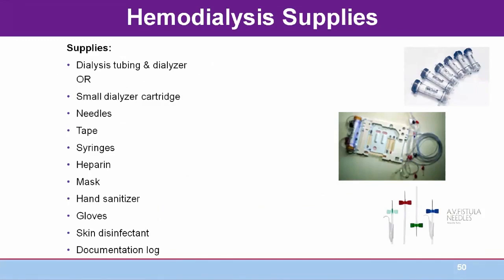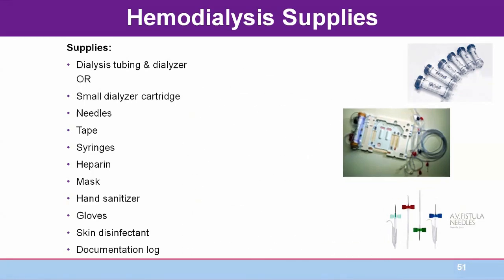These are examples of the supplies needed to set up the hemodialysis machine and begin treatment. As you can see, these therapies require a lot of education, skill, equipment, and supplies. The illustration of the needles brings us to an important part of hemodialysis therapy — the vascular access. The vascular access is not just important but essential. We must have a way to get the blood from the patient to the dialyzer and back, and the patient at home must be willing and able to master the skills needed to care for and access the vascular access.